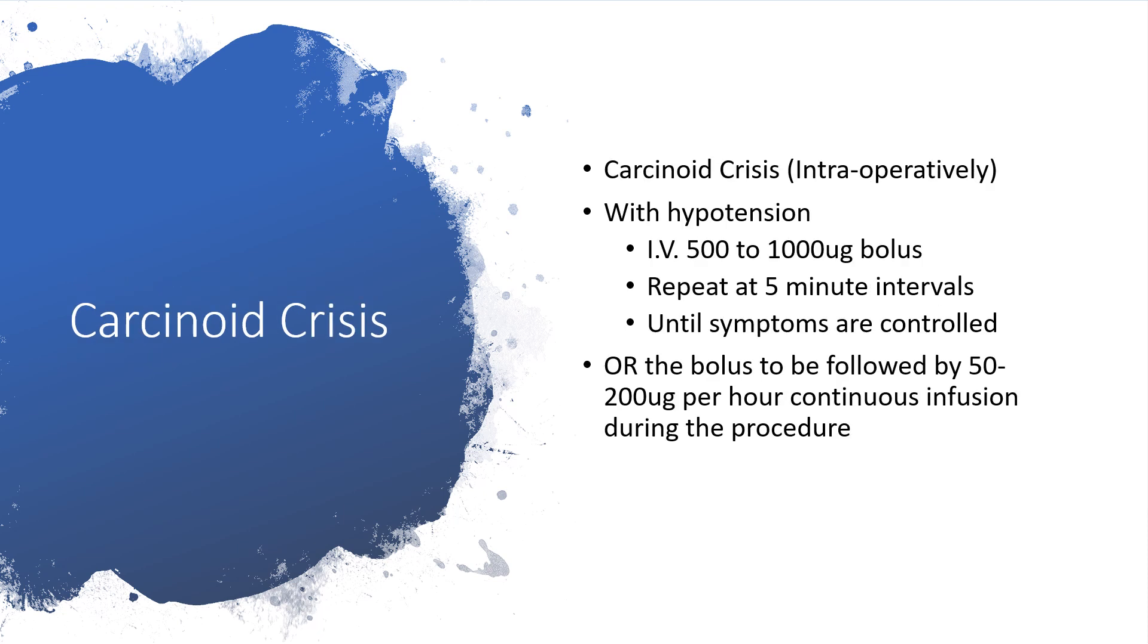If the situation at hand involves carcinoid crisis and is intraoperative with hypotension, then set your IV line, give Octreotide intravenously 500 to 1000 mcg bolus, then repeat that every five minutes until the symptoms are under control. Or you may choose to give it bolus followed by 50 to 200 mcg per hour continuous infusion while the procedure is still ongoing.